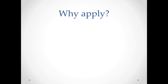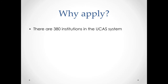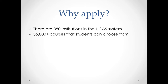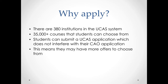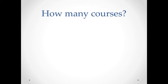If we consider why somebody might apply: there are 380 institutions within the UCAS system and over 35,000 courses that students can choose from. Students can submit a UCAS application which won't interfere with their CAO applications, so essentially students might have more offers to choose from when decisions are made from the institutions.